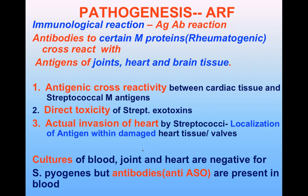Other schools of thought regarding pathogenesis include direct toxicity of streptococcal exotoxins damaging heart tissue, and actual invasion of the heart by streptococci with antigens localized within damaged heart walls. Importantly, blood, joint, and heart cultures are negative for Strep pyogenes, but anti-streptolysin O antibodies are markedly raised.